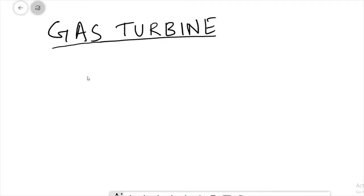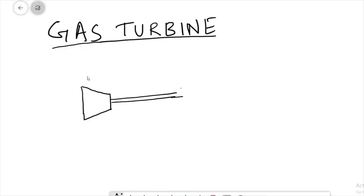First, let us look at the closed type gas turbine engine and how it works, and then we will see the open type. In the closed type gas turbine engine, the main arrangement consists of a turbine and a compressor, which are coupled together. This is the basic arrangement.